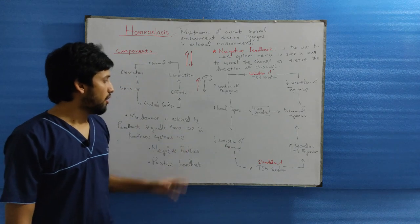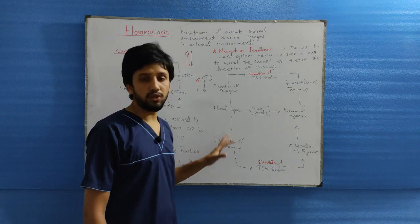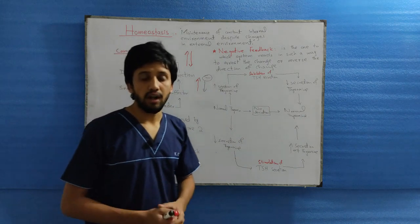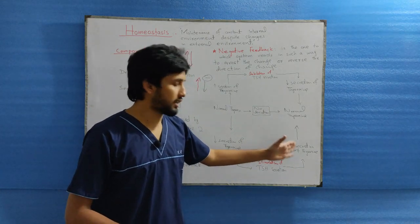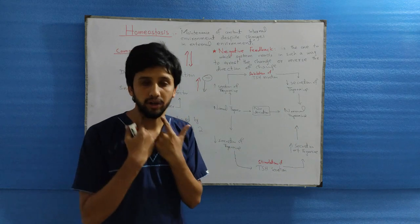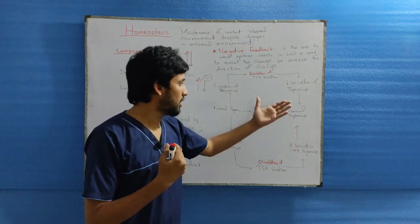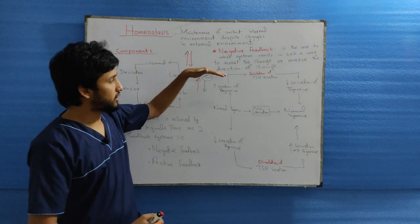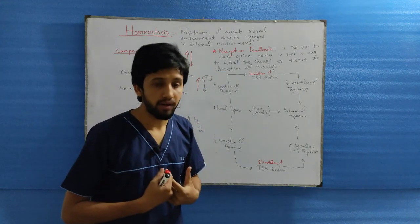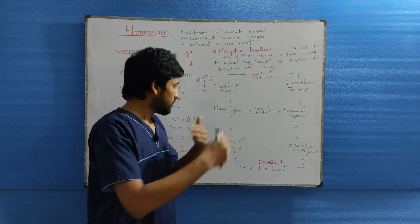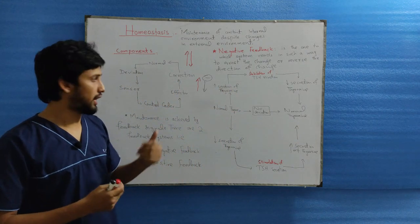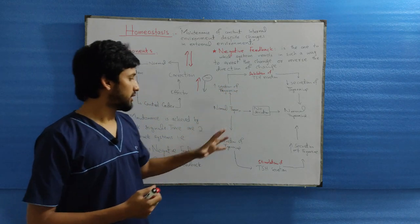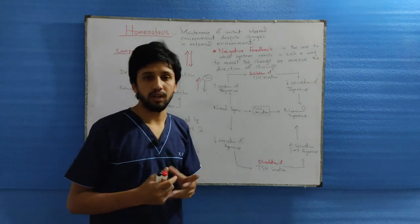Likewise, when there is a decrease in the secretion of thyroxine, there will be stimulation of TSH secretion. This TSH secretion will increase the secretion of thyroxine from the thyroid glands, bringing it back to normal. This is how the thyroxine level in the blood is maintained in homeostasis through the negative feedback mechanism.